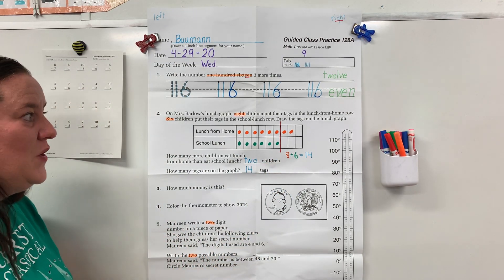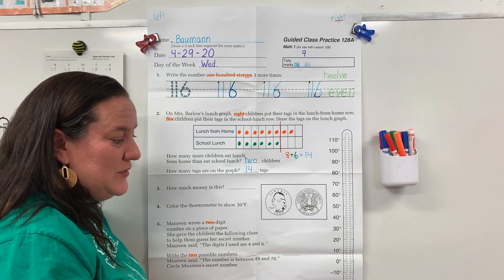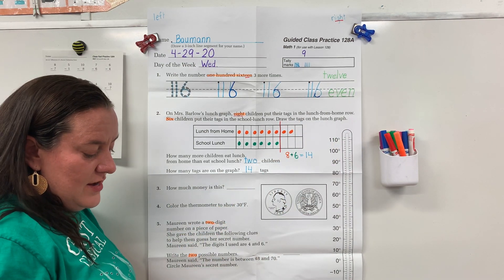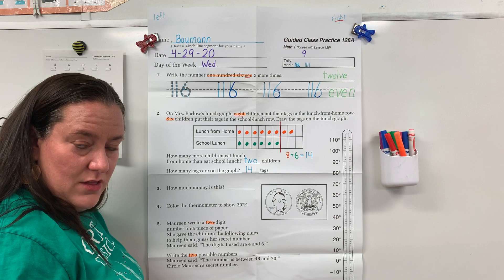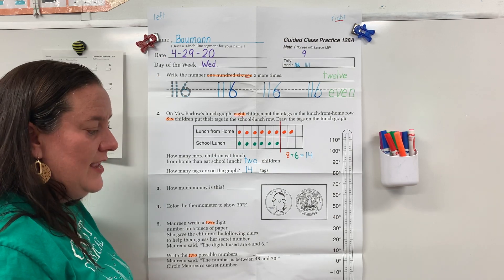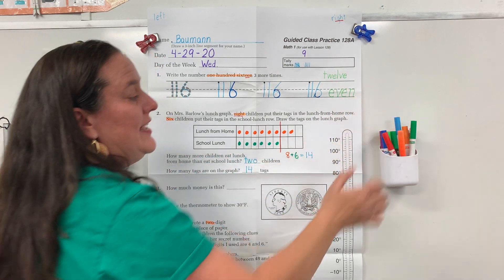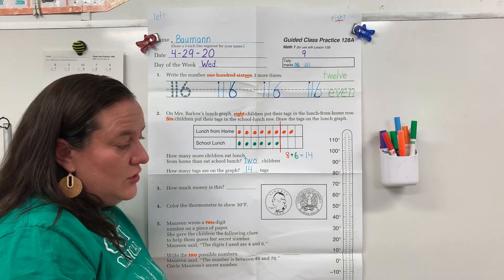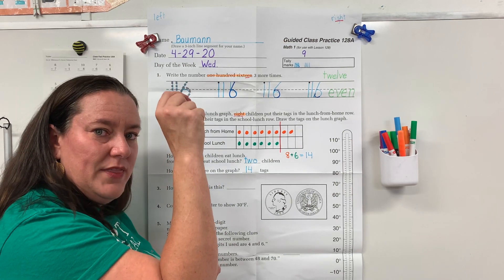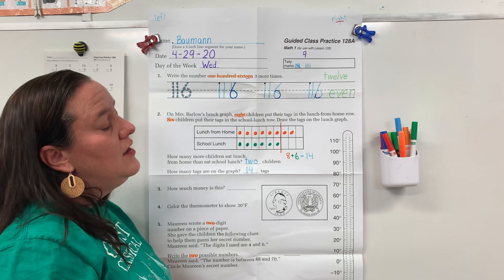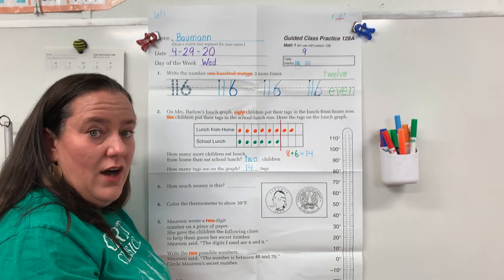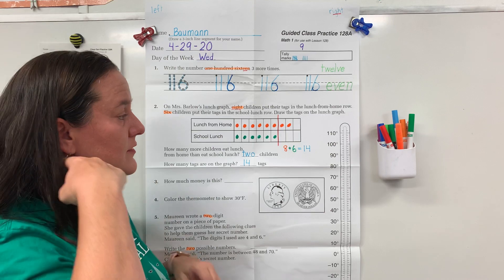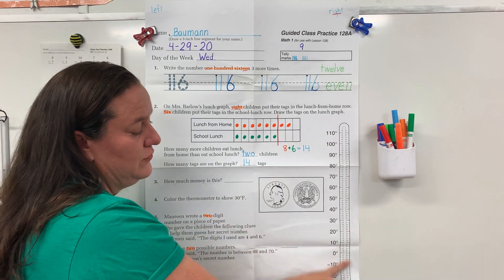We are learning something new today — we are learning about thermometers. Here in the US, our thermometers are usually giving us a temperature in Fahrenheit. You might see a little circle with an F. In other countries, they often do their temperatures in Celsius, but we are going to be learning how to do Fahrenheit.